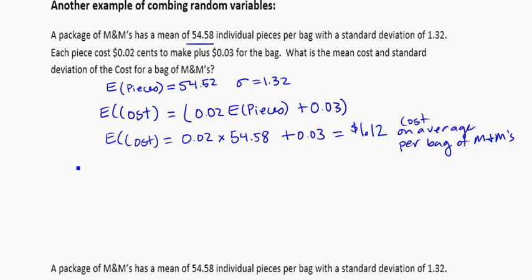For my variance for the cost, it's going to be equal to 0.02 times the variance of the number of pieces plus the 0.03. And in a sense you could probably just ignore what I've written there and go straight to the formula.